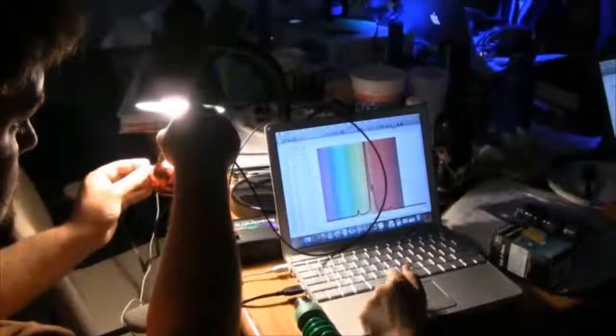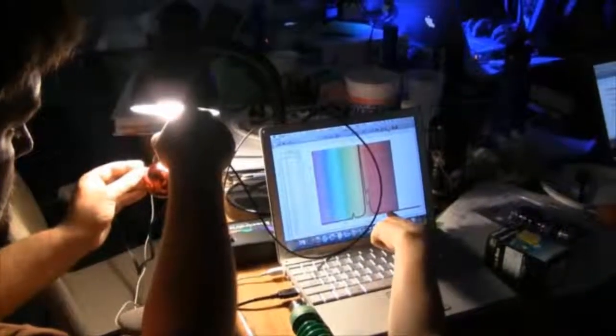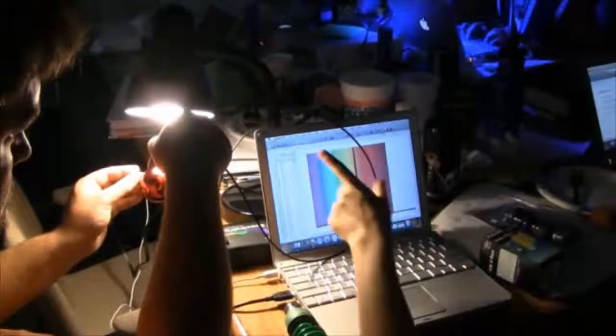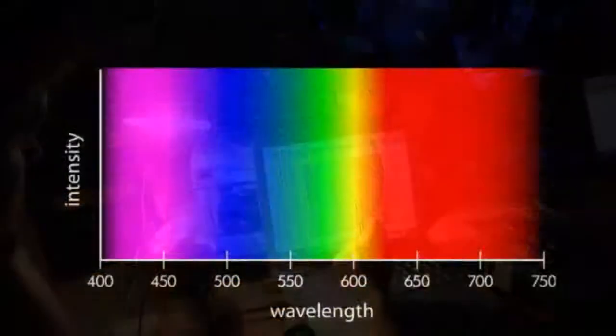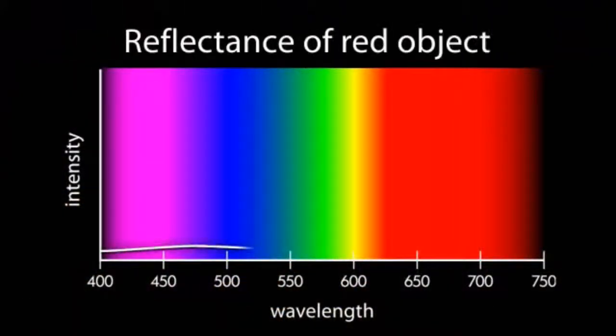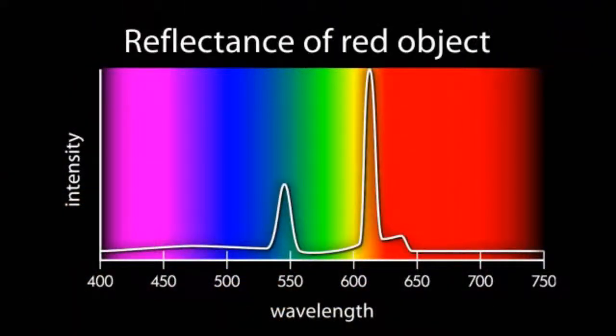What you observed with the spectrophotometer may have been confusing. For example, we expect that a red object would reflect red light. However, the spectrophotometer does not show light reflected from the red wavelengths. Why does this happen?